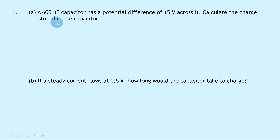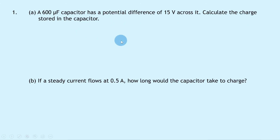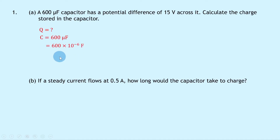Question 1a says that a 600 microfarad capacitor has a potential difference of 15 volts across it. Calculate the charge stored in the capacitor. Writing down what we know from the question, we're trying to find the charge Q. We know the capacitance C is 600 microfarads, which we can rewrite as 600 times 10 to the minus 6 farads, and our potential difference V is 15 volts.